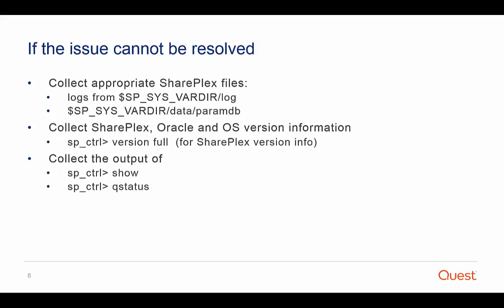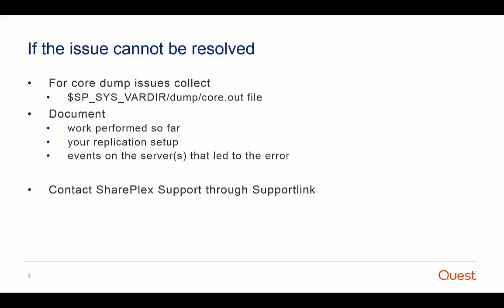But what if you cannot resolve the issue? In this case, collect appropriate SharePlex files from the log directory and also the paramdb file from the data directory. Collect SharePlex, Oracle, and OS version information — you can use the 'version full' command in SP Control to get the SharePlex version. If a process is core dumping, collect the core.out file from the Vardir dump directory. This is a small text file, not the large binary file. If you do not find it, document that you looked but the file is not there. Also, document the work you have performed so far so it will not be duplicated.